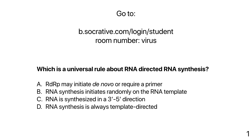Which is a universal rule about RNA-directed RNA synthesis? The correct answer is A: RNA-dependent RNA polymerase may initiate de novo or require a primer. The others are wrong: synthesis doesn't initiate randomly — it initiates at very precise sites. RNA is synthesized 5'-to-3', not 3'-to-5'. And while synthesis is mostly template-directed, there are examples of non-templated RNA synthesis.